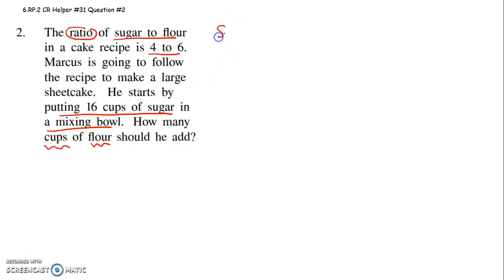Okay, so we'll set up our ratio, sugar to flour. And we're given that it's in the ratio of four to six. Then over here, again, we have to do our sugar to flour. And we know he puts in 16 cups of sugar. So underneath sugar, you have to put 16.